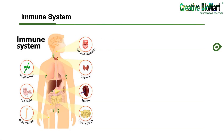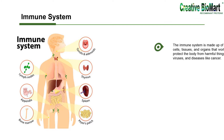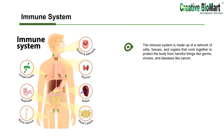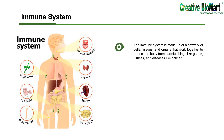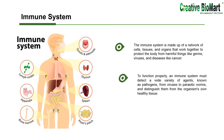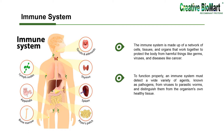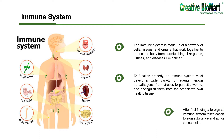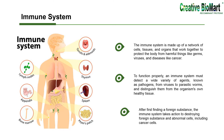The immune system is made up of a network of cells, tissues, and organs that work together to protect the body from harmful things like germs, viruses, and diseases like cancer. To function properly, an immune system must detect a wide variety of agents, known as pathogens, from viruses to parasitic worms, and distinguish them from the organism's own healthy tissue.